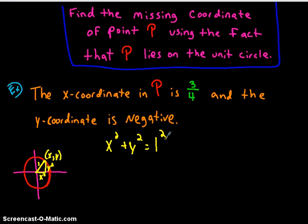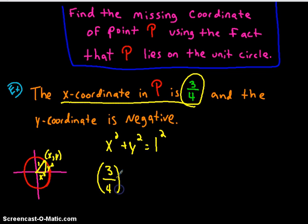So if that's the case, if I know my x coordinate is three-fourths, I'll plug it in for x. It's going to be three-fourths squared plus y squared equals one, and you'll basically solve that equation for y.